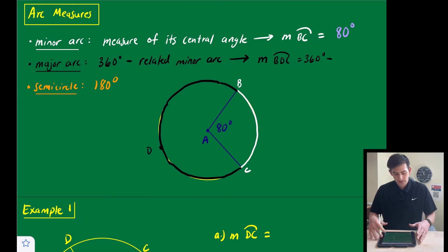Now for the major arc, if we think about the entire circle, it's going to have a measure of 360 degrees. So to find our major arc, we can just subtract the related minor arc from 360 degrees, and that'll give us our major arc. So in this diagram here, we said that our minor arc was 80 degrees. So to find our major arc, which is BDC, we would say 360 minus 80 degrees, and that would give us 280 degrees for our major arc.